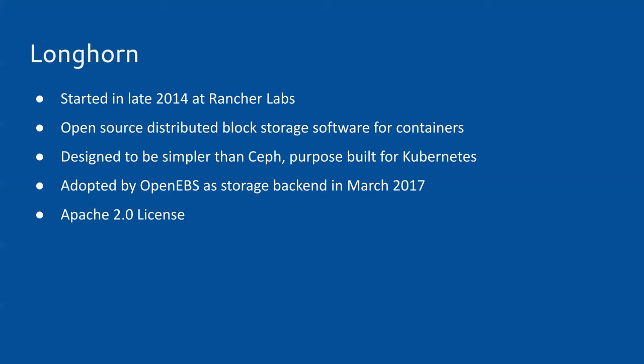Longhorn has been adopted by OpenEBS as one of their storage backends back in March 2017, and that's one proof that Longhorn is targeting enterprise-grade storage. This technology has been adopted by other companies for their own products, demonstrating our embrace of the open source model. All of Longhorn's code is licensed under Apache 2.0. For more on licensing and external library dependencies, you can check the documents or our PR to the CNCF TOC.